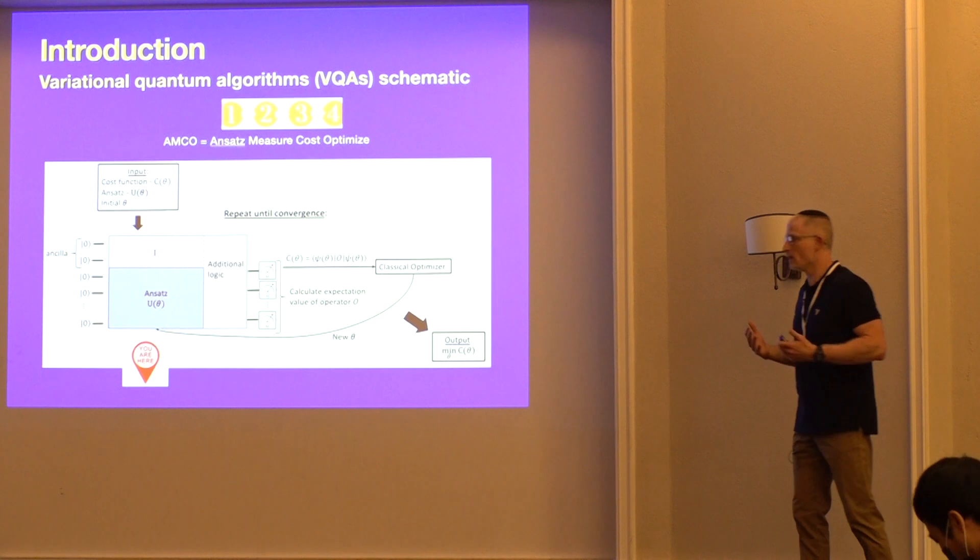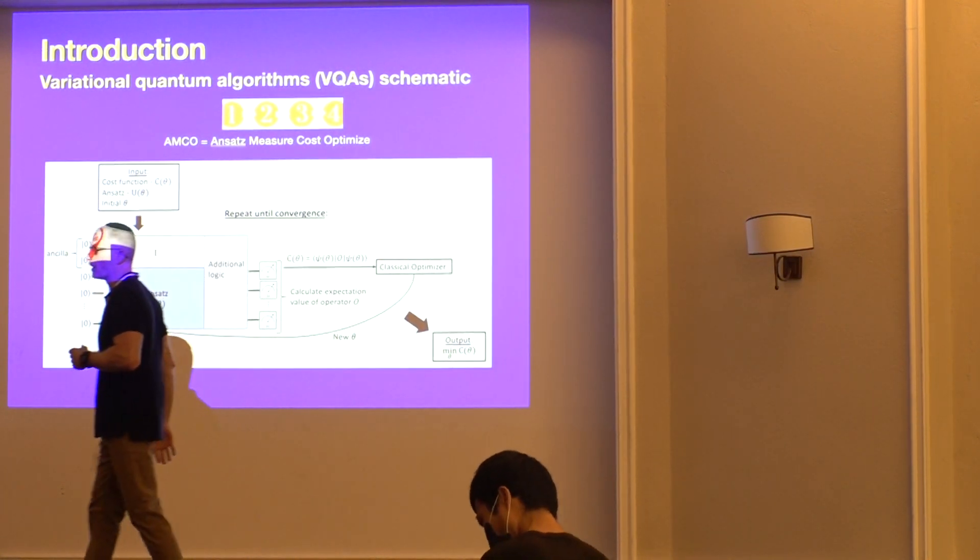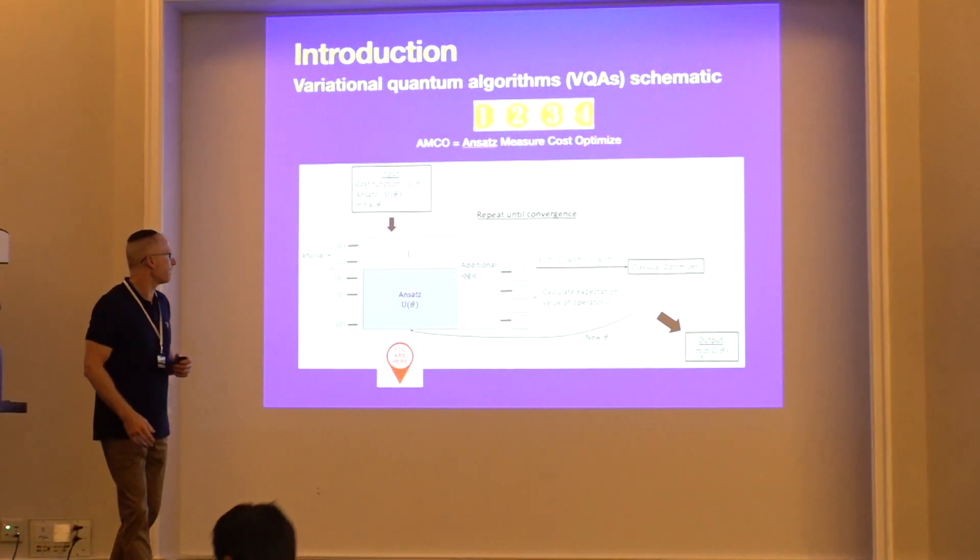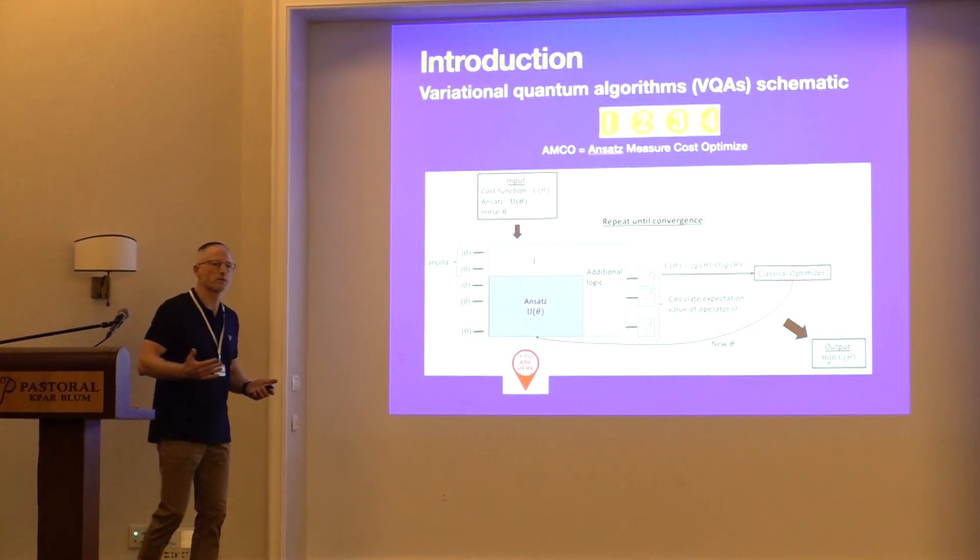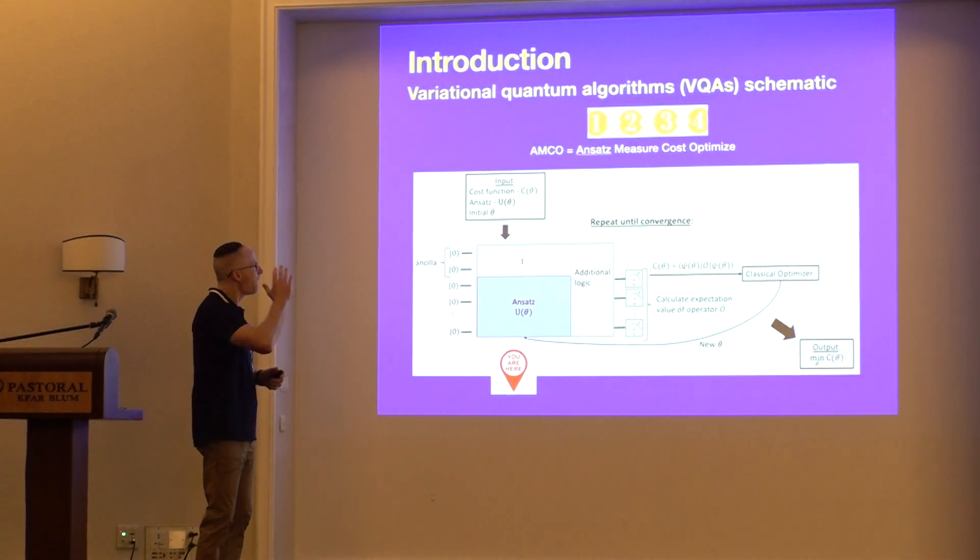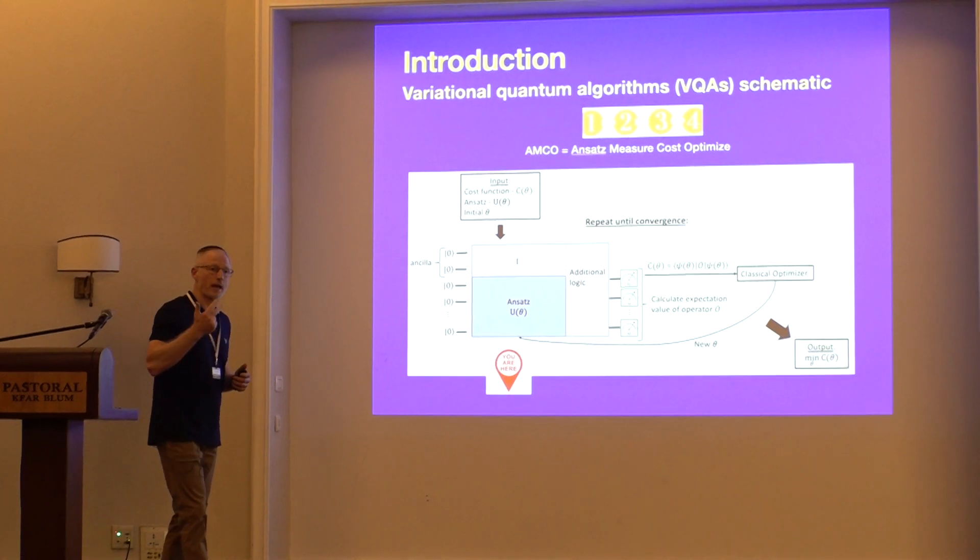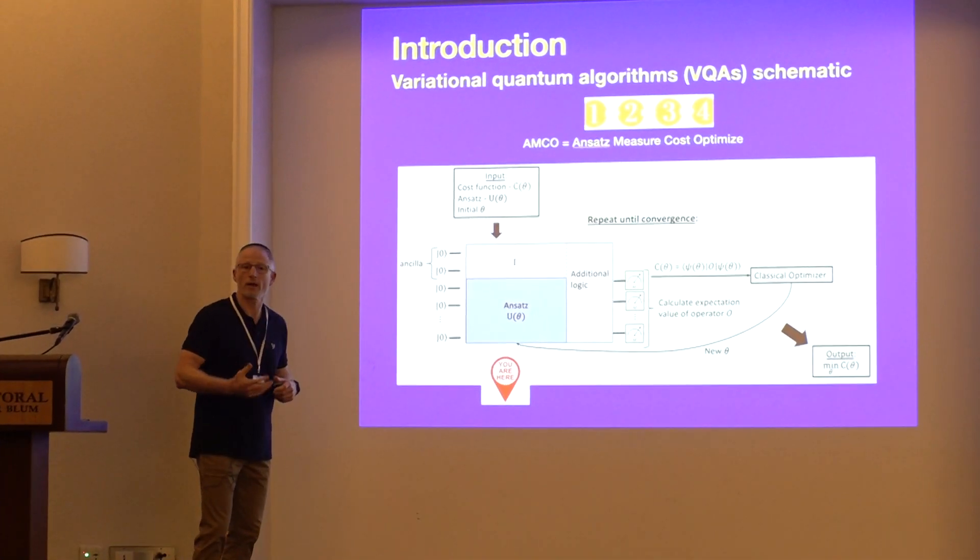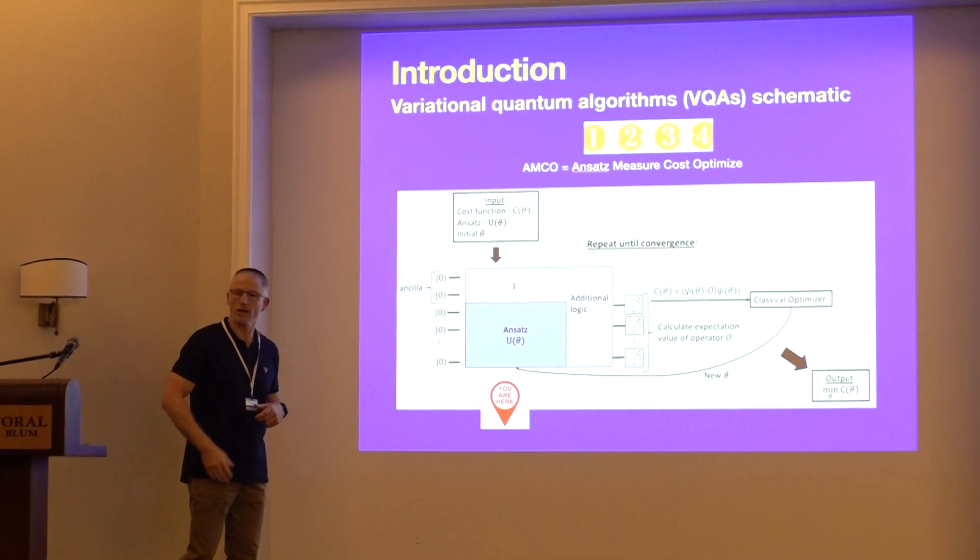The flagship algorithm in this hybrid space is the so-called Variational Quantum Algorithm or VQA, and this is a general schematic. To help you remember the details, I came up with an acronym, AMCO, which stands for Ansatz, Measure, Cost, and Optimize. The quantum computer handles the first two, and the classical computer handles the second two.